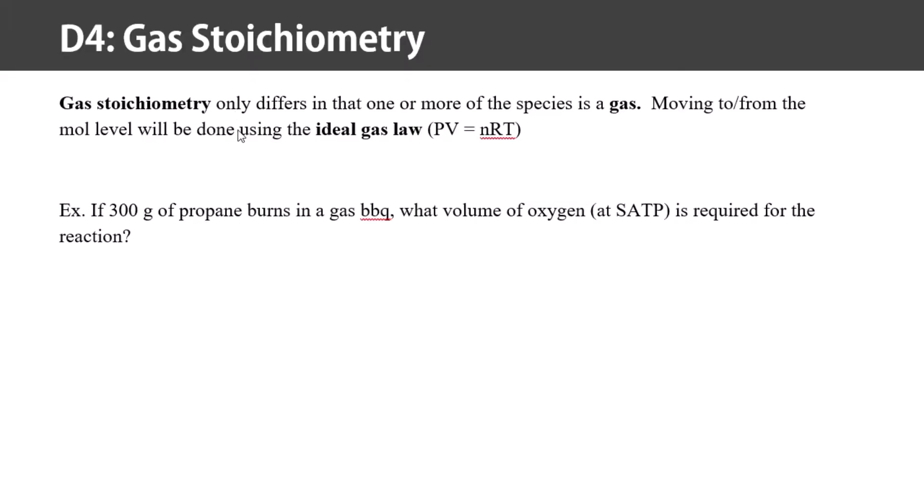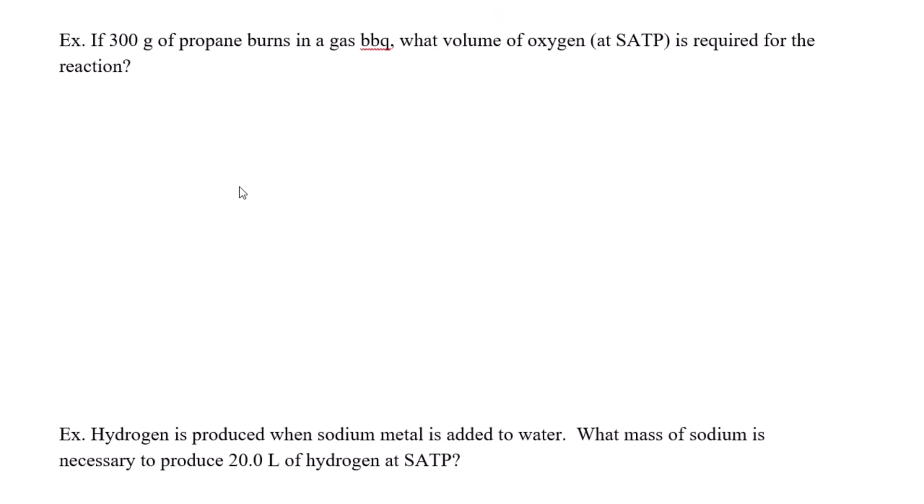Or maybe I'm looking for the volume of a gaseous product that's being produced. In those cases, then again, I have to use the ideal gas law. So let's see what that looks like. If we have 300 grams of propane that's burning in a gas barbecue, what volume of oxygen at standard ambient temperature and pressure is required for the reaction.